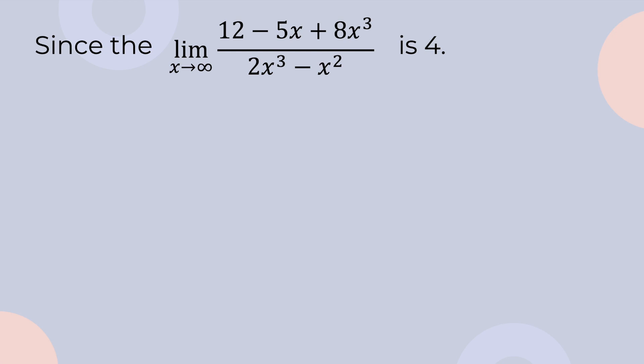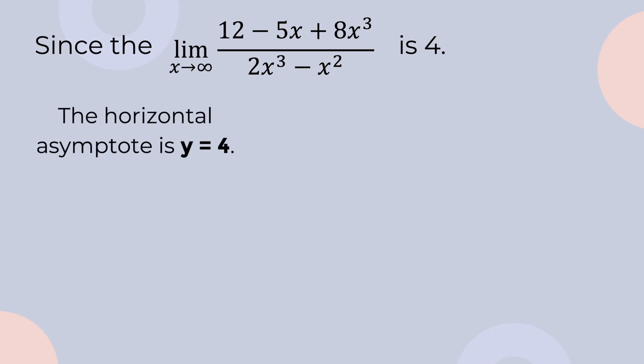Given that the limit of the rational function is a real number, we can say that the horizontal asymptote of the rational function is equal to the limit. Let us have an example. Since the limit of the function 12 minus 5x plus 8x cubed all over 2x cubed minus x squared as x approaches positive infinity is 4, therefore, the horizontal asymptote is y is equal to 4.